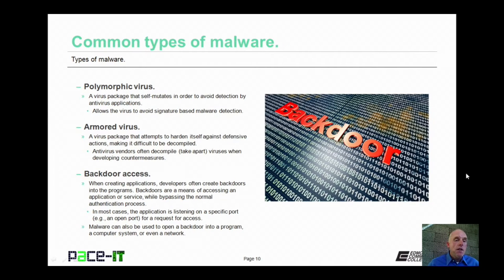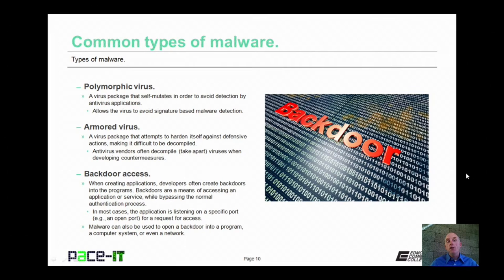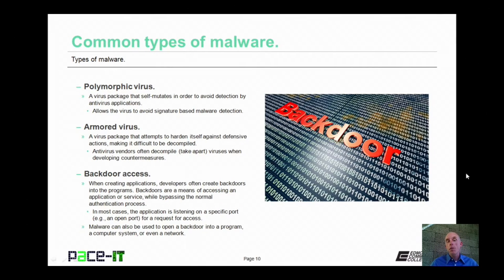A polymorphic virus is a virus package that self-mutates in order to avoid detection by antivirus applications. This allows the virus to avoid signature-based malware detection, which is why you might want to use a combination of signature-based and anomaly-based antivirus.